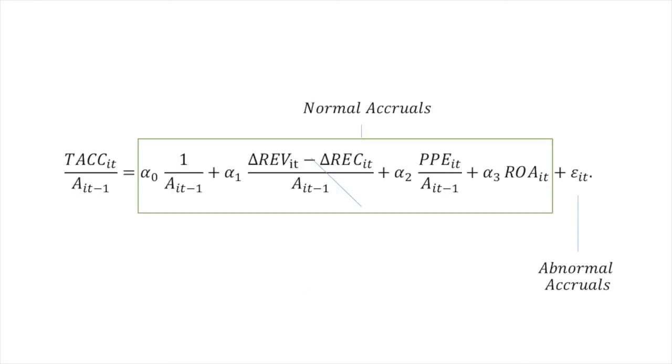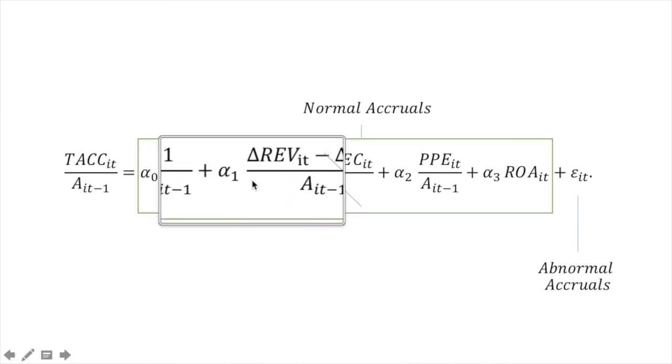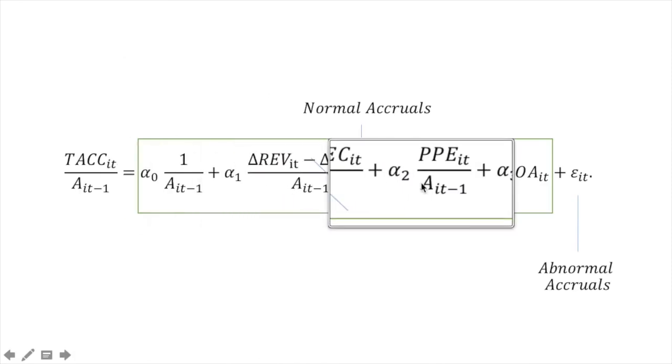Recall that in the modified Jones model, the residual or error term represents the abnormal accruals. Therefore, this part of the model estimates the normal accruals.